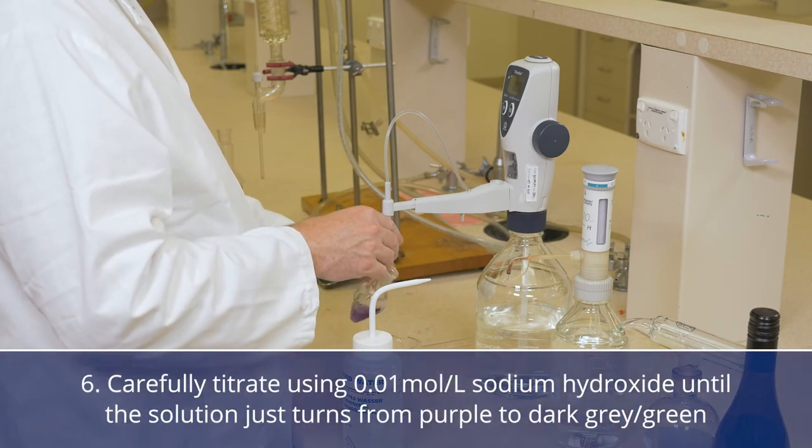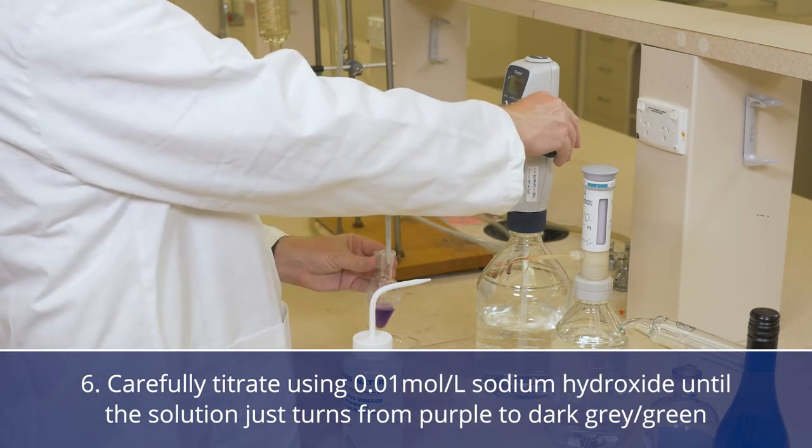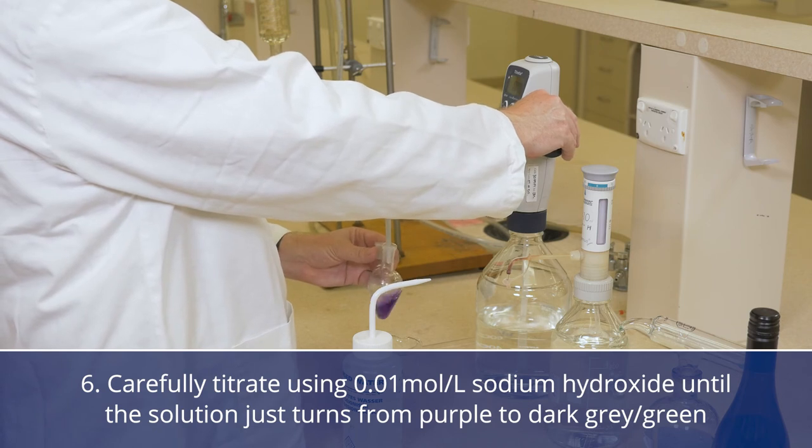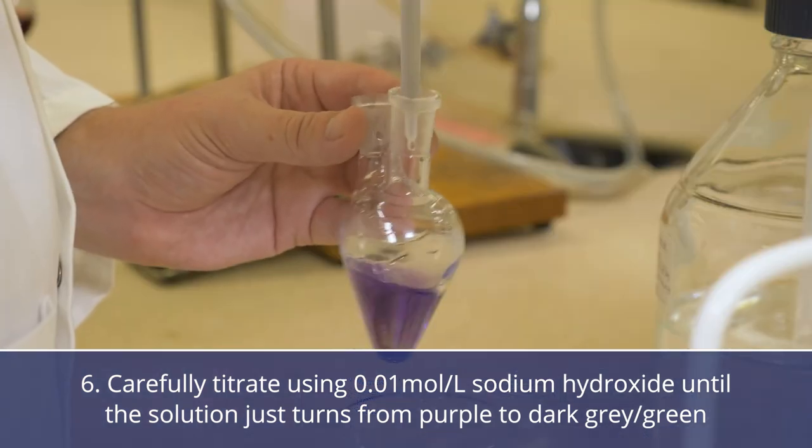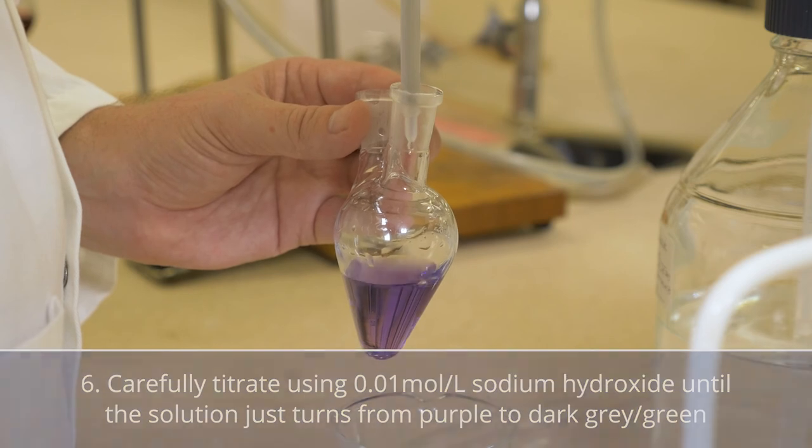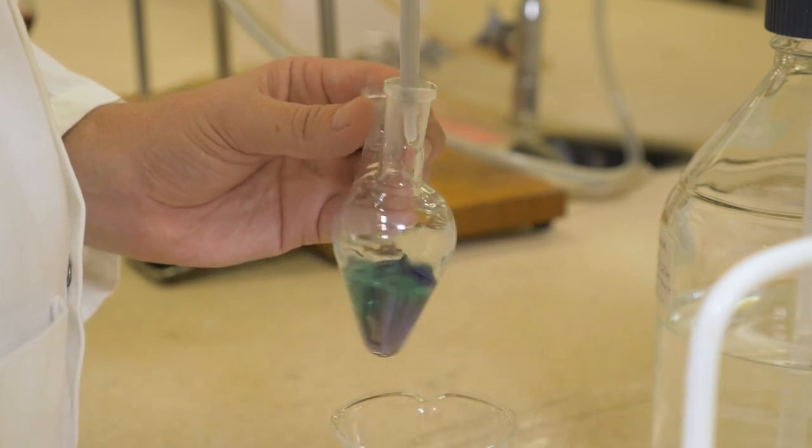Carefully titrate using 0.01 M sodium hydroxide until the solution just turns from purple to dark grey-green while constantly shaking the pear shaped flask.